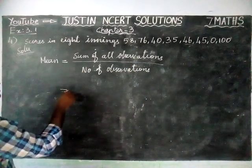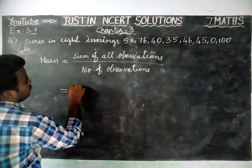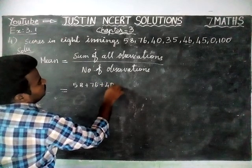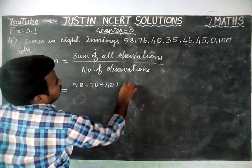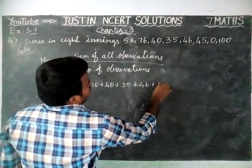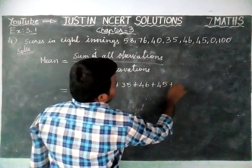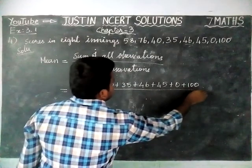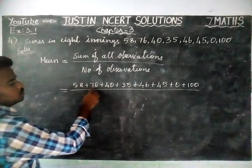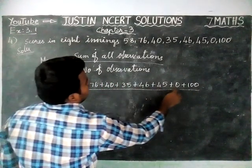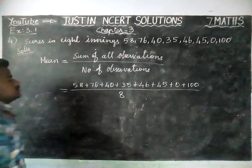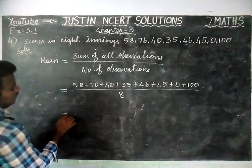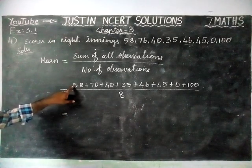Sum of all observations — we have to add all the values: 58 plus 76 plus 40 plus 35 plus 46 plus 45 plus 0 plus 100, divided by the total number of innings, which is 8. So, the total number of observations is equal to 8. Now we are going to add all the observations.